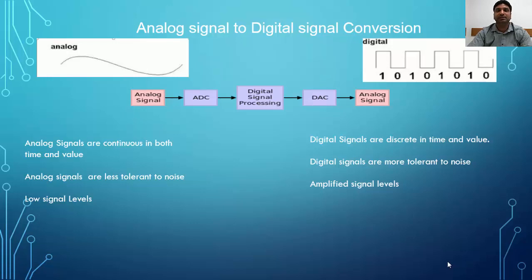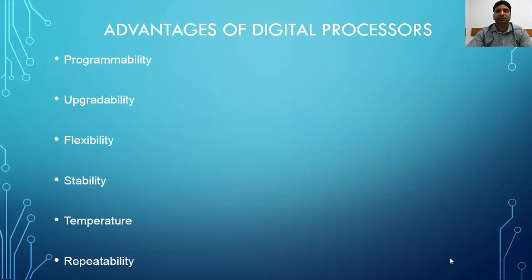Moreover, digital signals are less tolerant to noise and we can expect amplified signal output. Digital processors are programmable, they are upgradable and flexible, they are stable and resistant to temperature, and repeatability is possible with digital processors. This means every time they give the same output irrespective of the conditions, which is not possible with analog processors.